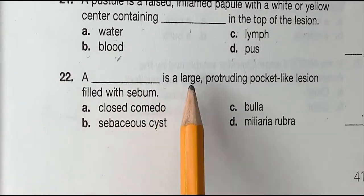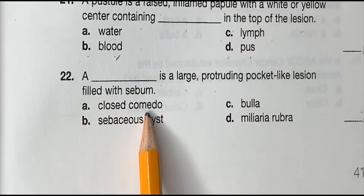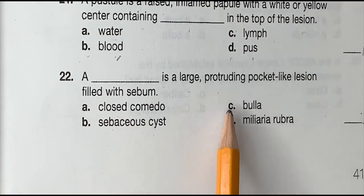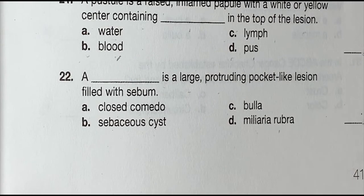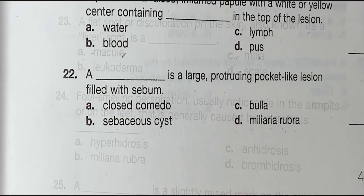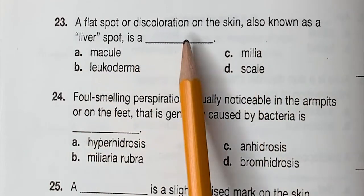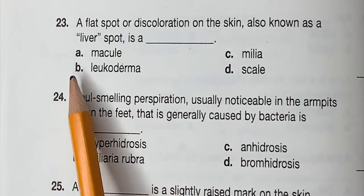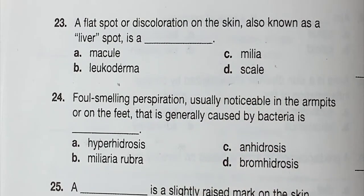Question 22: A blank is a large protruding pocket-like lesion filled with sebum. Question 23: A liver spot is a blank. Is it A, macule. B, leucoderma. C, miliaria. Or D, a scale. And the correct answer is A, macule.